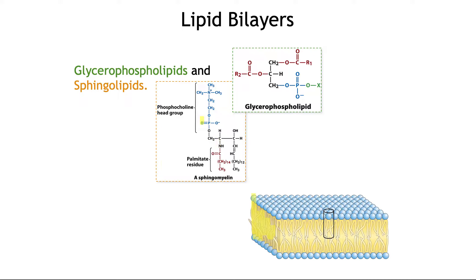Amphipathic means they have both polar and non-polar head groups. You have the phosphate groups, and hence they're known as phospholipids. They could have charged groups at either of the two carbons. Within a lipid bilayer, the hydrophobic interactions will predominate between hydrophobic fatty acids, while the hydrophilic interactions will predominate with the aqueous environment on either side of the bilayer.